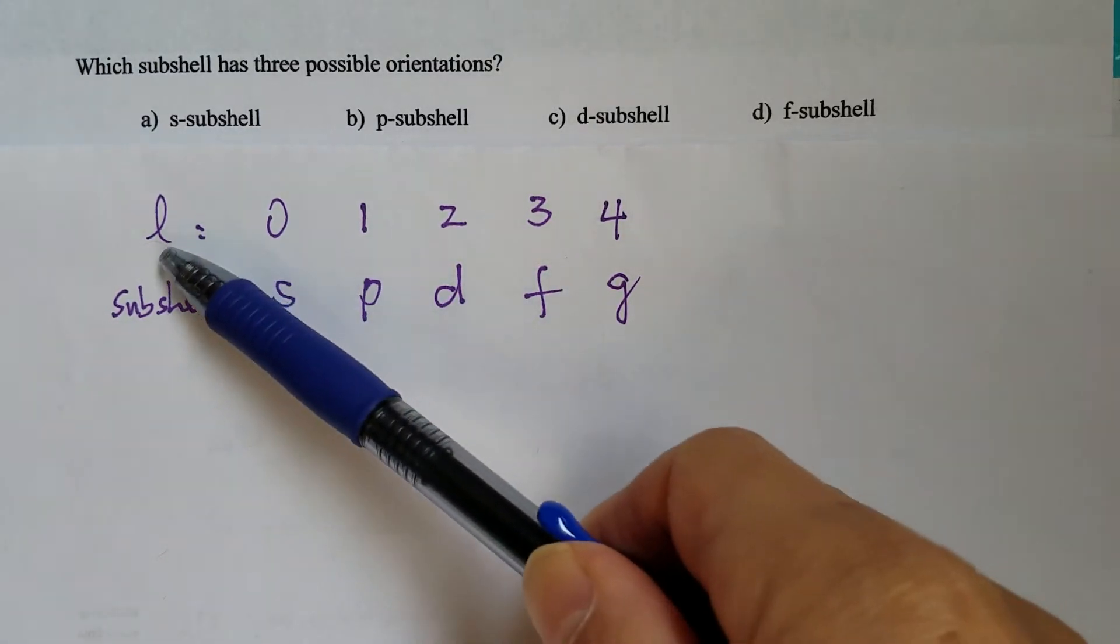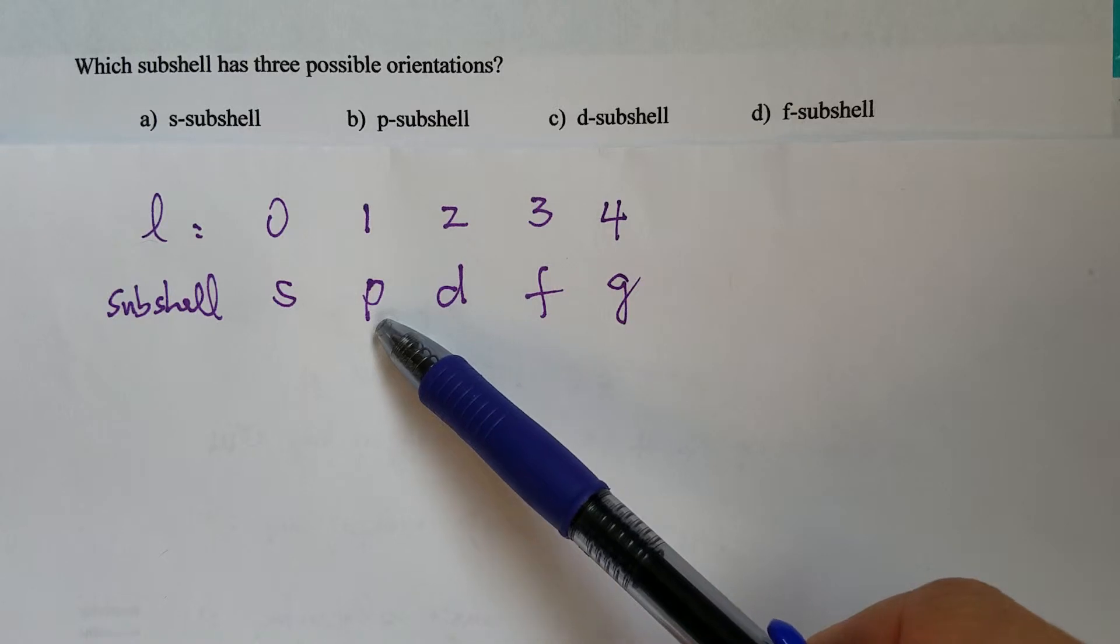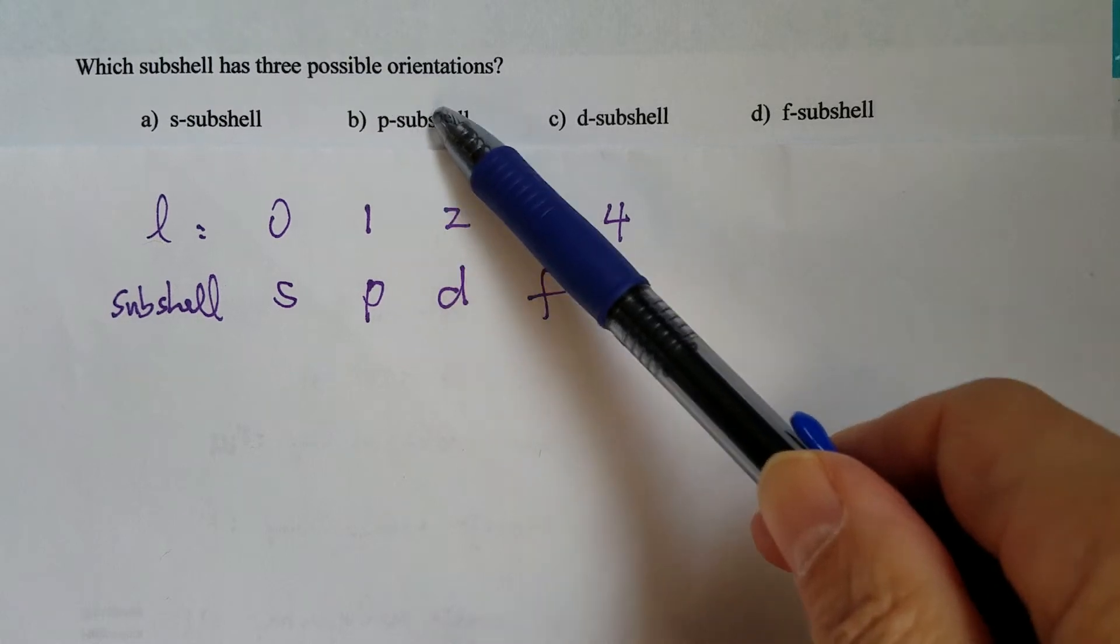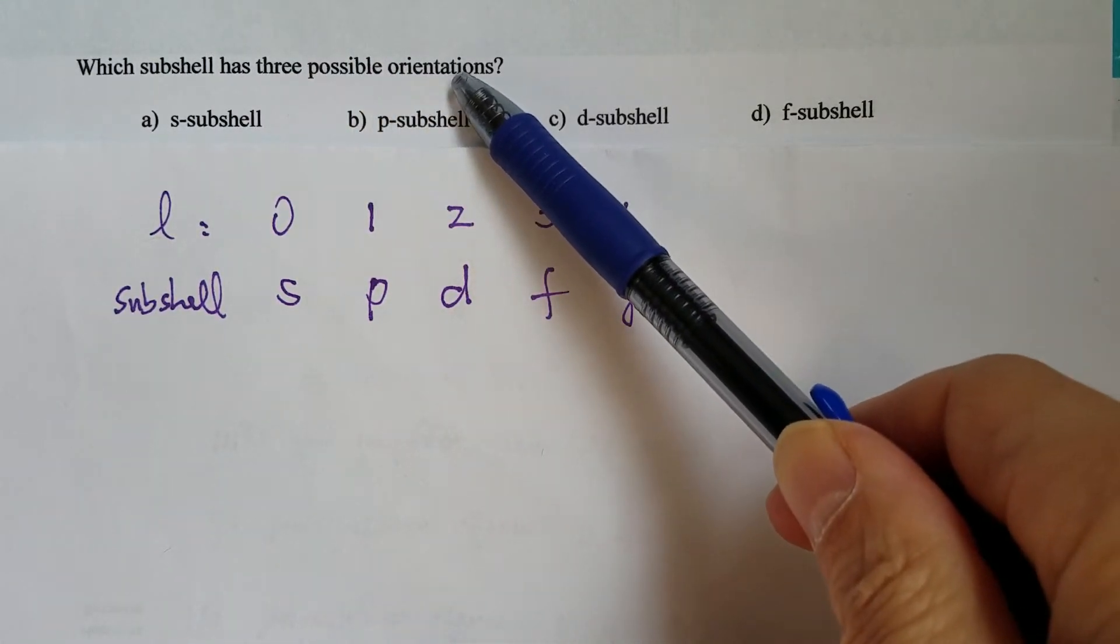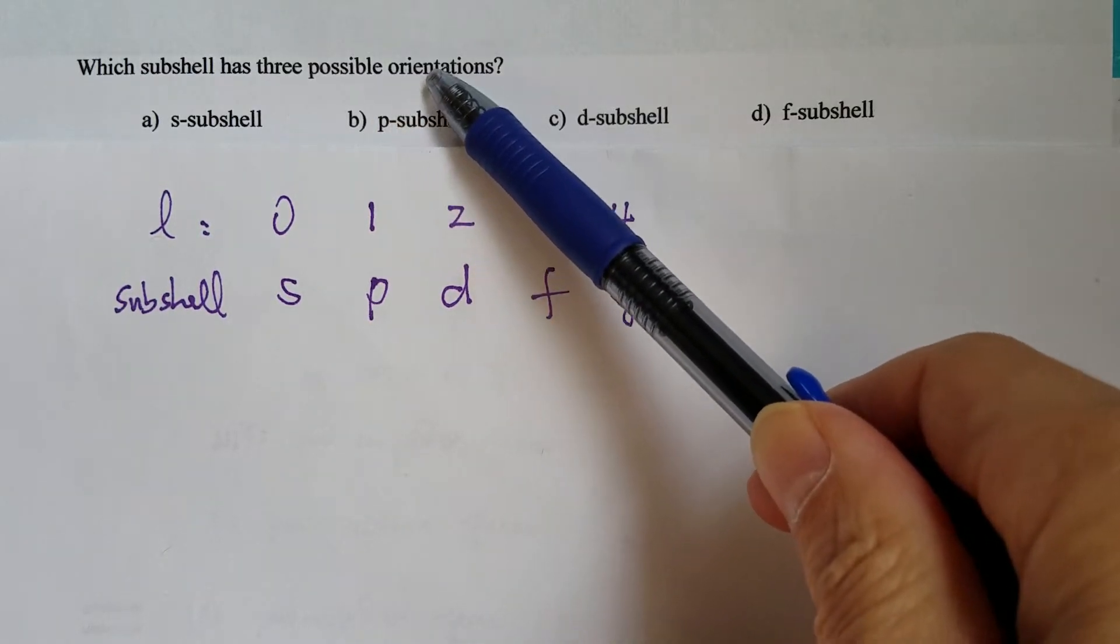If L equals one, then that's the p-subshell. So therefore, the answer has to be p-subshell. The p-subshell has three ML values, or in other words, three different orientations.